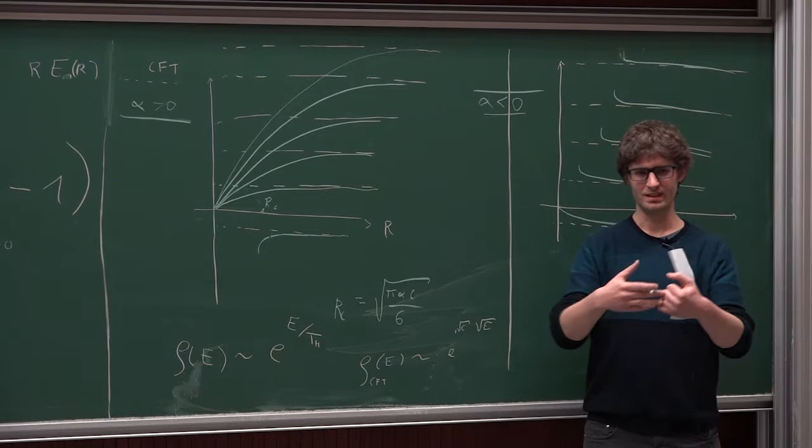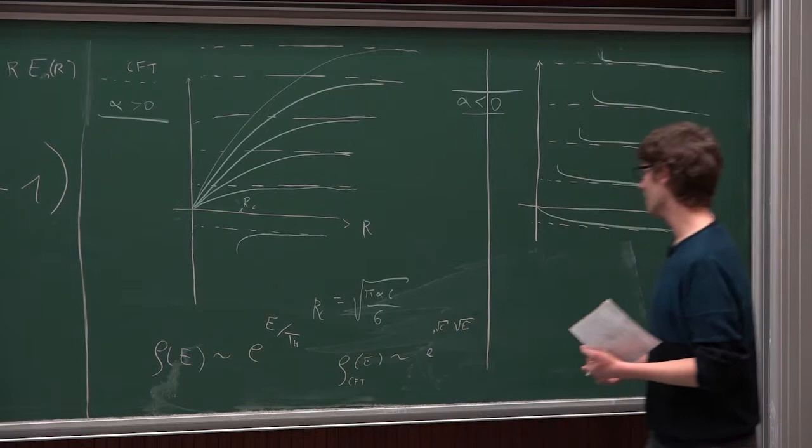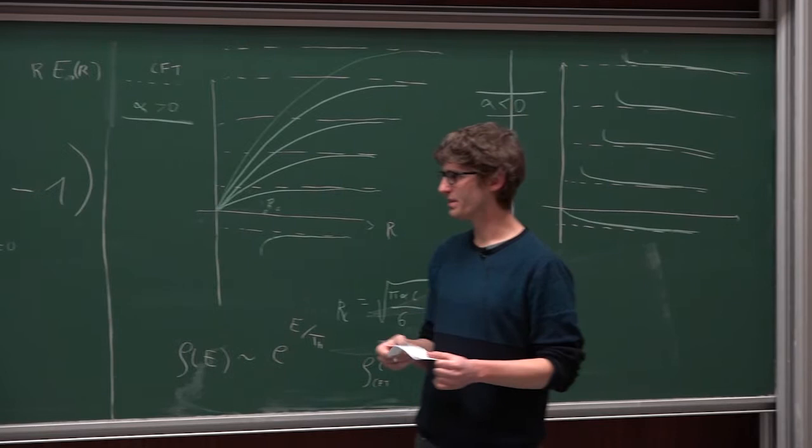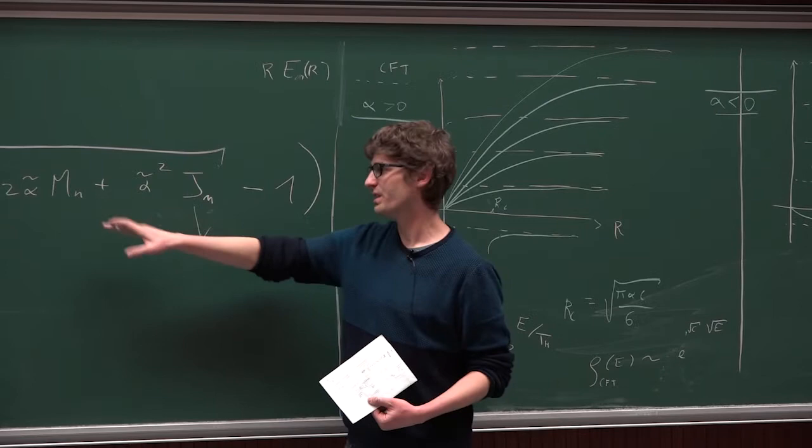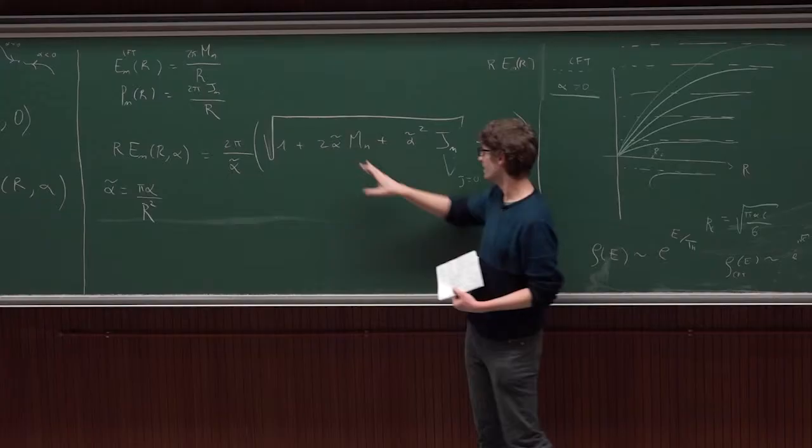And, in general relativity, you have a well-defined concept of measuring the energy and momentum inside the finite volume of space-time. And, so if you measure the energy and momentum of these BTZ black hole solutions inside some region of radius R, you will get this formula, where you can, you have to think that M and J now are continuous parameters that are the mass and the angular momentum of the black hole.